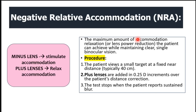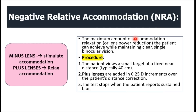The patient sits at the typical near working distance of 40 centimeters, looking at a small accommodative target, and is asked to read it aloud. You then introduce plus lenses in 0.25 diopter increments over the patient's distance correction, forcing the patient to relax accommodation. The point at which the patient reports a sustained blur is where you stop the test and record the reading — that is your negative relative accommodation.